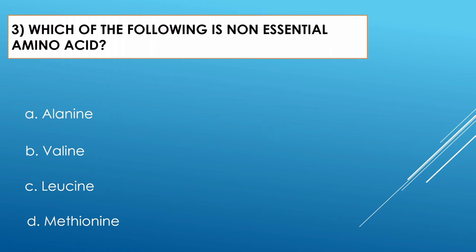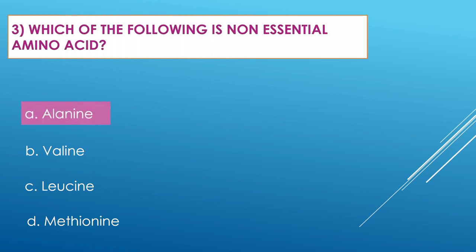Question number three: Which of the following is a non-essential amino acid? Option A: alanine. Option B: valine. Option C: leucine. Option D: methionine. The correct option is alanine.